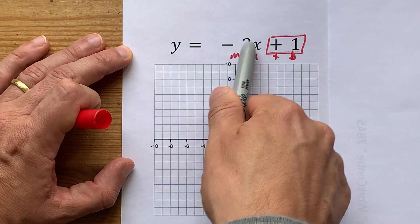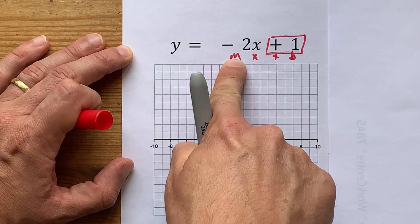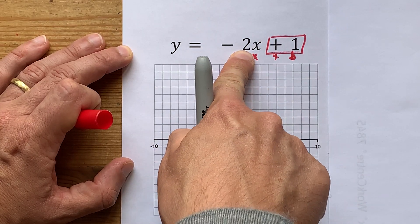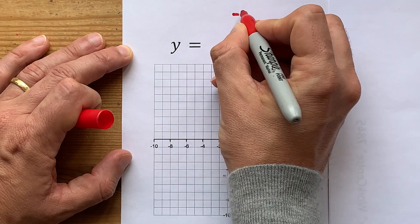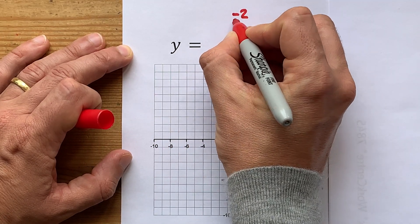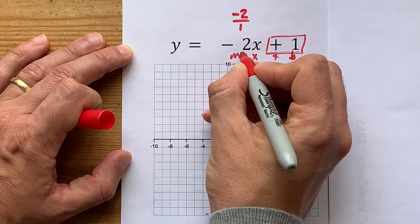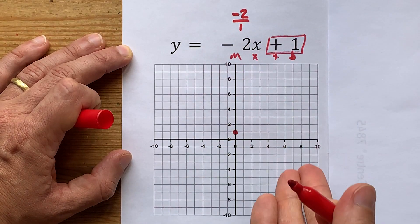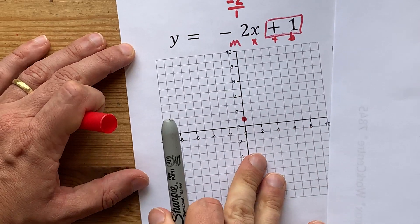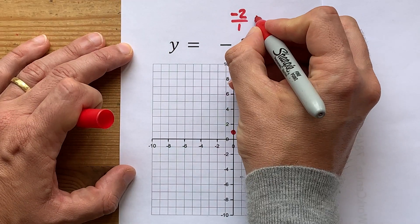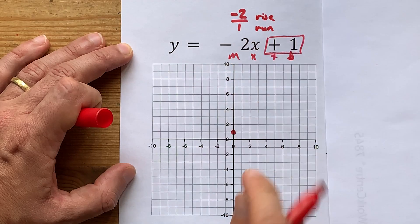Then look at what's in front of x. We have an m, or slope, of negative 2. Now as a fraction, we're going to write that as negative 2 divided by 1, because dividing by 1 doesn't actually change what that number is. The reason I like writing it as a fraction is because that emphasizes that there is both a rise and a run.